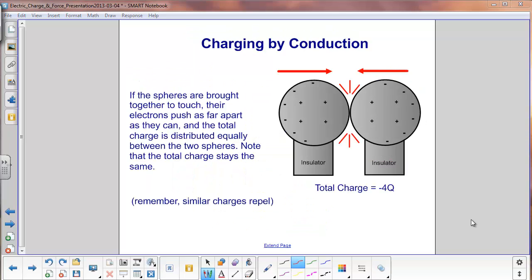The spheres are now brought together and they touch. The electrons are now free to flow between the two charges, and the excess electrons from this sphere flow over to this one, and they are as far apart as possible, as like charges repel.